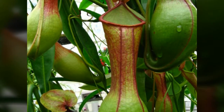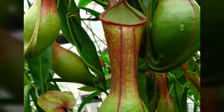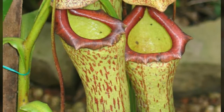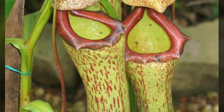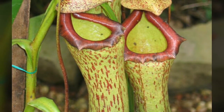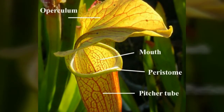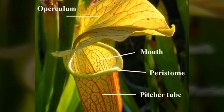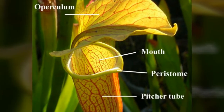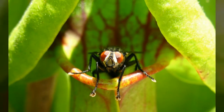The pitcher of the pitcher plant is actually a modified leaf. The leaf lamina is modified into a pitcher-like structure, and the leaf apex is modified into the lid of the pitcher. The bright color of the pitcher makes it very attractive to insects, and the walls of the cup also produce sweet liquid nectar, which further attracts insects.